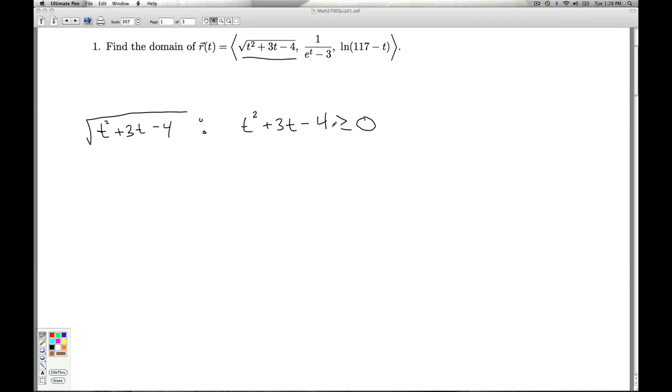This is a non-linear inequality, so remember back to algebra. What we do is we find the critical values, the values where the expression is equal to 0, or where the expression doesn't exist. In this case, we'll just set it equal to 0. It factors nicely for us. And so we get t equals negative 4, and t equals 1. So that's where it's actually equal to 0.